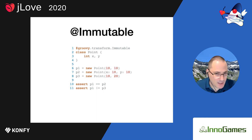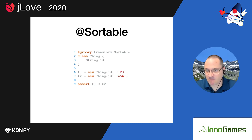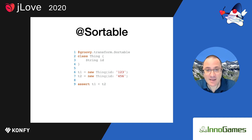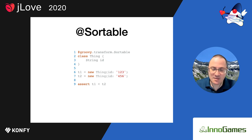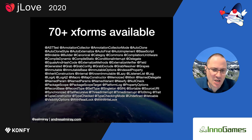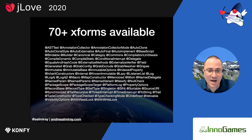Ever had trouble implementing the Comparable interface? Apply @Sortable. This also adds additional methods such as compareById or comparatorById — not just the proper implementation of compareTo. In fact, if you search the Groovy core libraries, you will find more than 70 AST transformations already implemented.